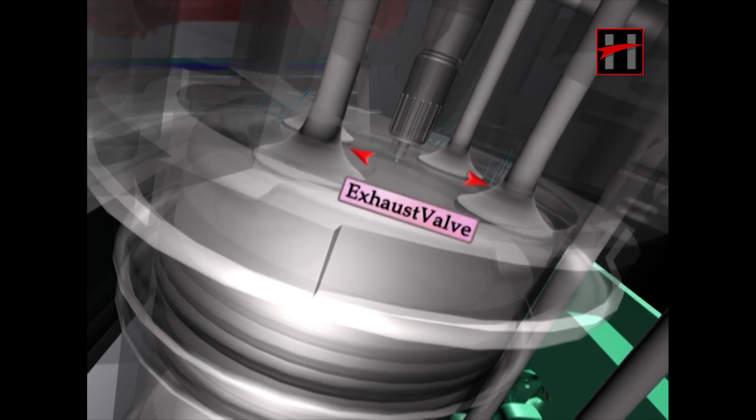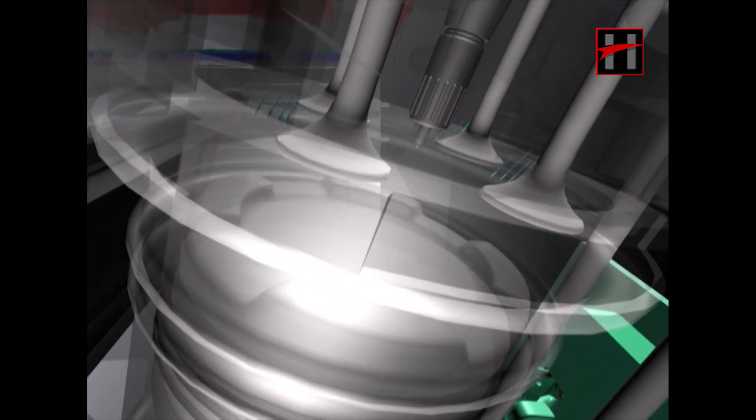During this time, the exhaust valves remain closed. The compressed air goes from the TDC to the BDC of the piston. When the compressed air reaches the BDC of the piston, the inlet valves close.